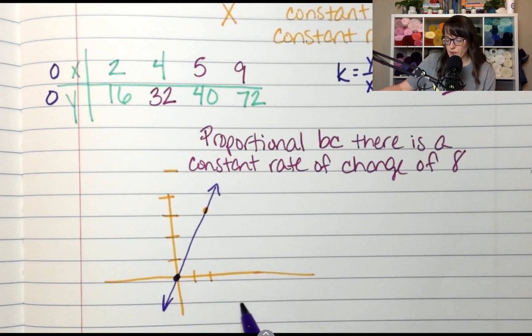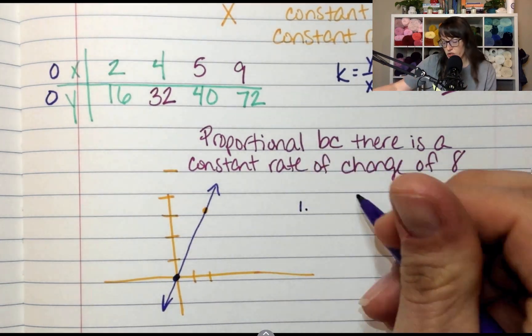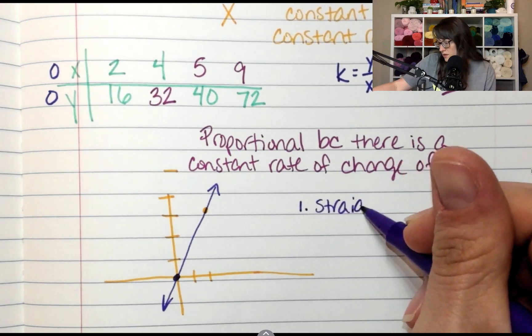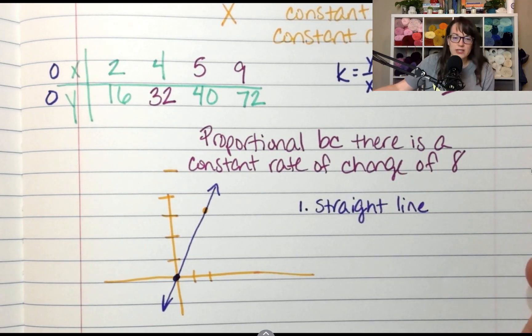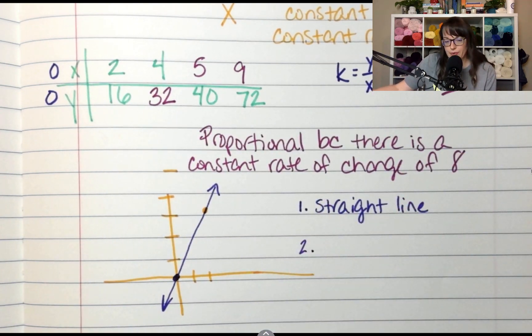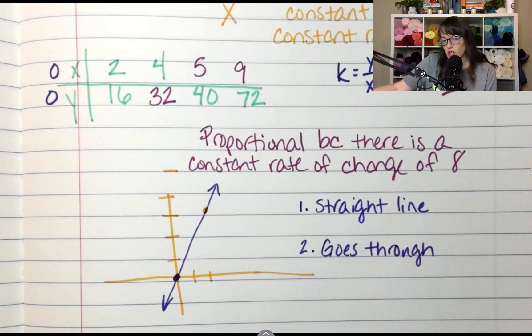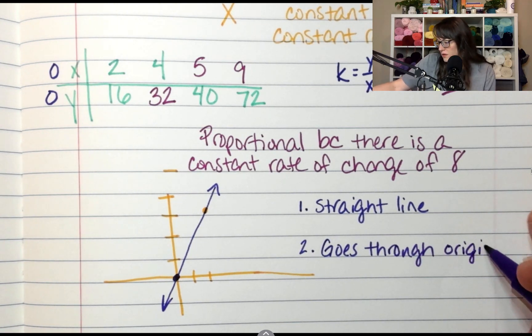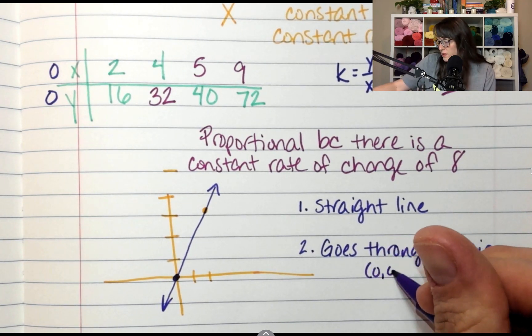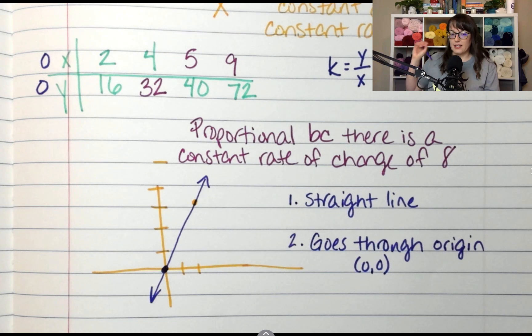Now, this is a proportional relationship because it meets two criteria. One, it is a straight line and it is continuously straight forever. The second thing it does, it went through 0, 0, and we're going to call that the origin, which is 0, 0. Any time a graph meets these two criteria, it's a single straight line that goes through the origin, it's a proportional relationship.